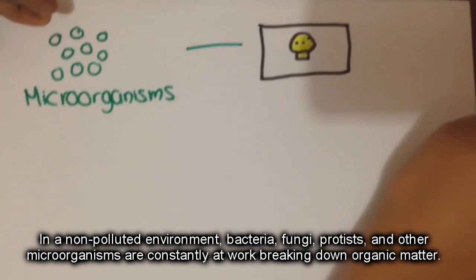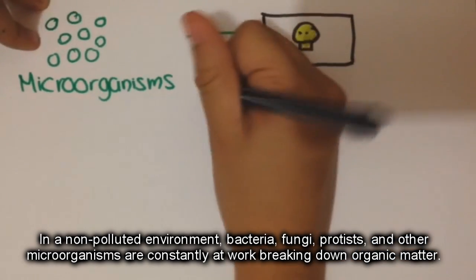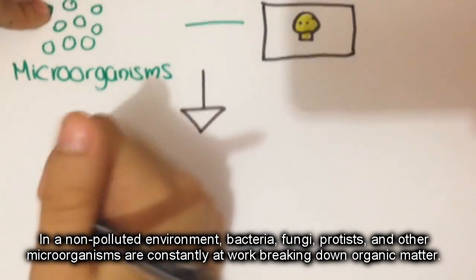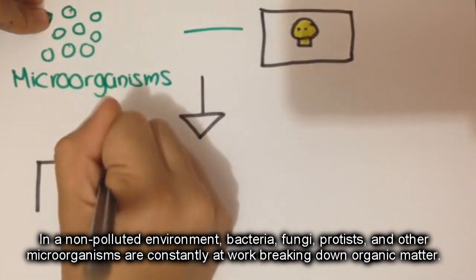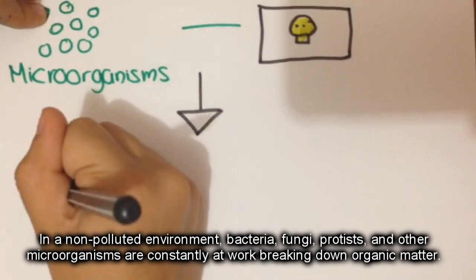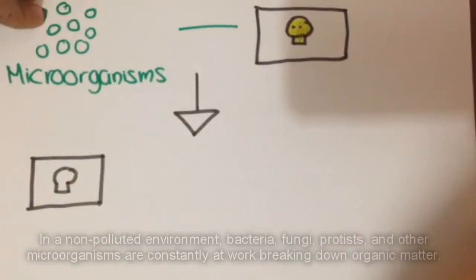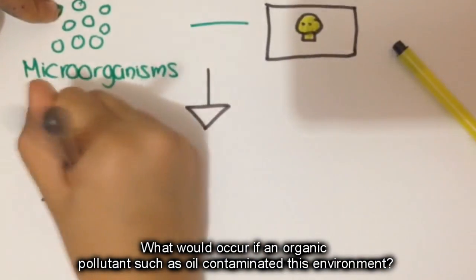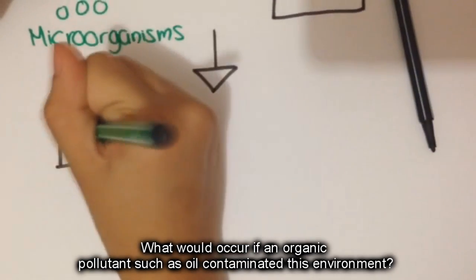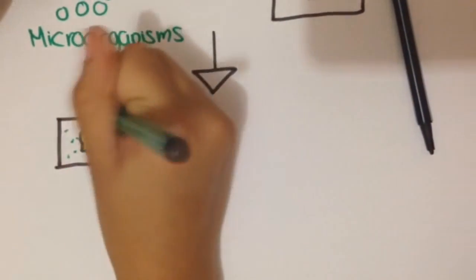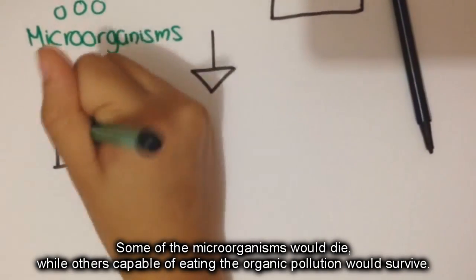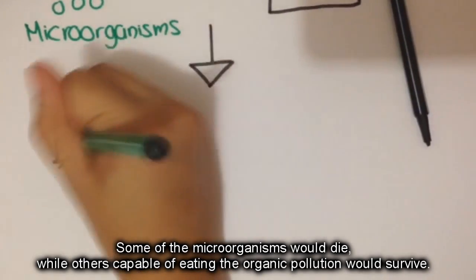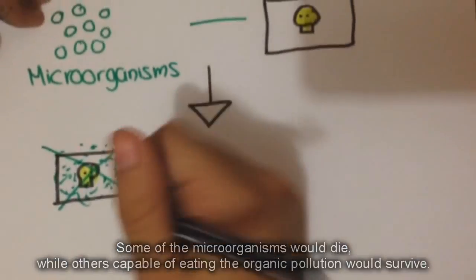In a non-polluted environment, bacteria, fungi, protists, and other microorganisms are constantly at work breaking down organic matter. What would occur if an organic pollutant, such as oil, contaminated this environment? Some of the microorganisms will die, while others capable of eating the organic pollution will survive.